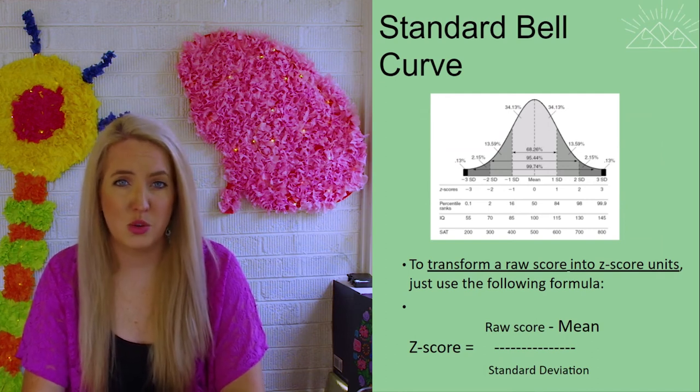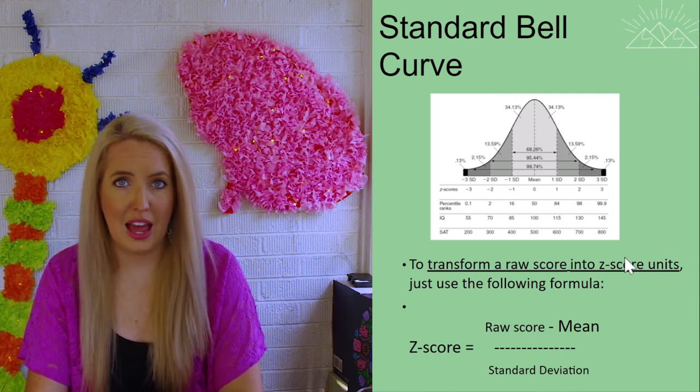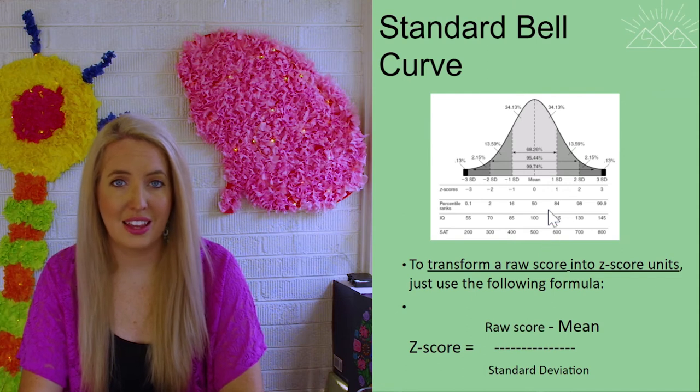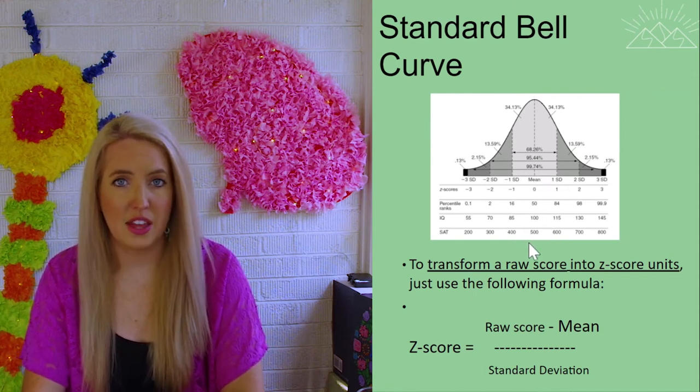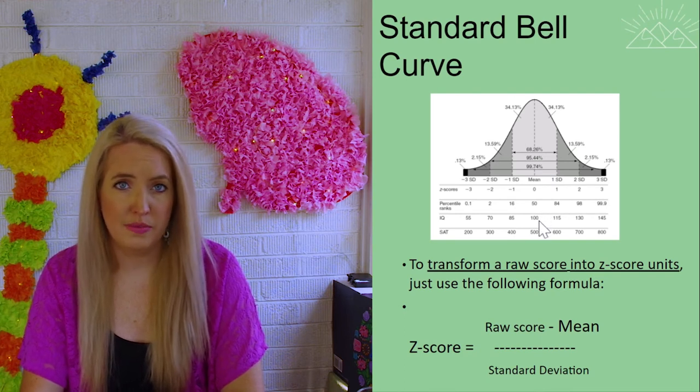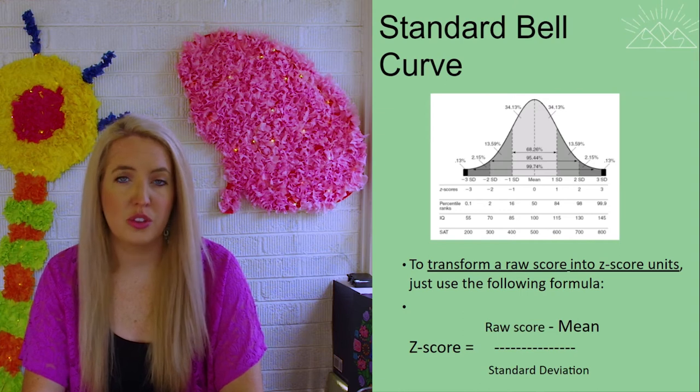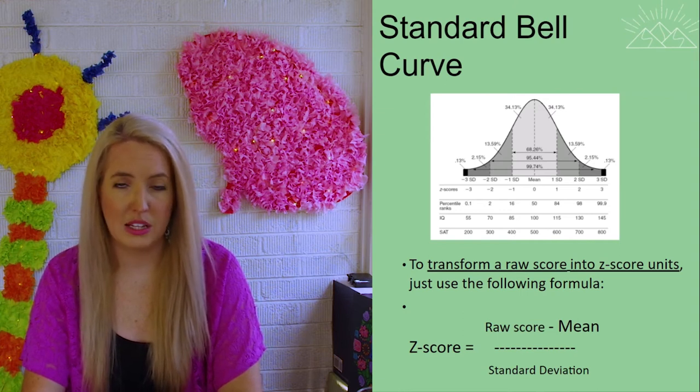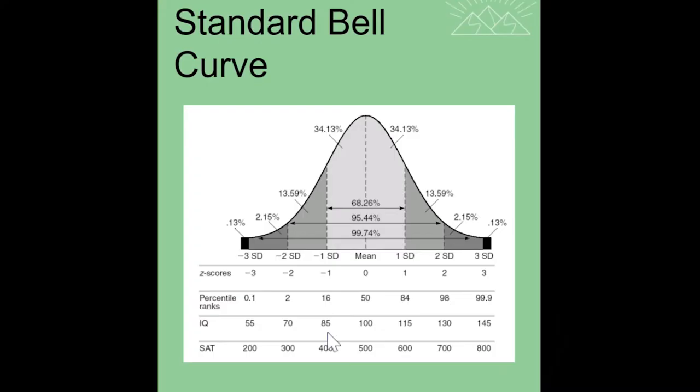So how do we describe where an individual falls compared to the rest of the population? There are two things that will always be given to you when looking at a standard bell curve. And that is the mean or the average score and the standard deviation. The mean or the average score is always going to be right in the middle of the graph. So this is what most people scored on say the SAT. That is going to go directly in the middle of our standard bell curve where 50% of the population scored that score.